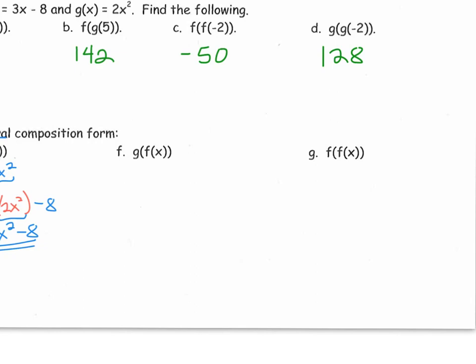Watch what happens when we reverse the composition. Instead of f of g of x, we now have g of f of x. Remember, by definition, we're just going to work inside out. f of x is the inside function, and f of x equals 3x minus 8. That is the output for f of x. That output now becomes the input for g of x.